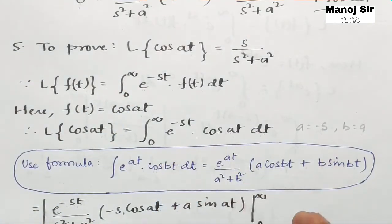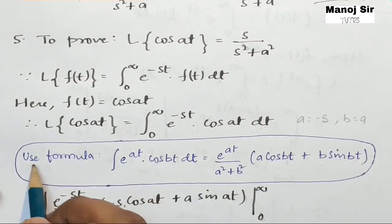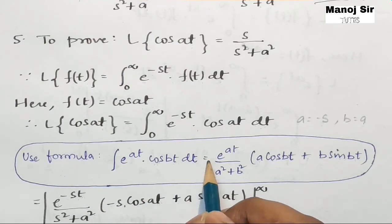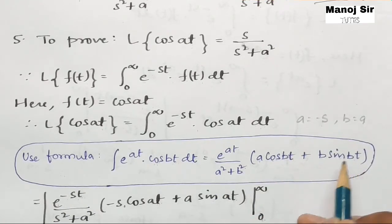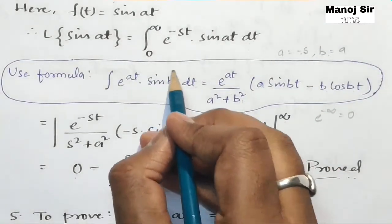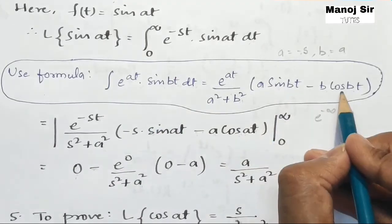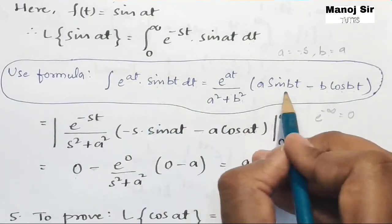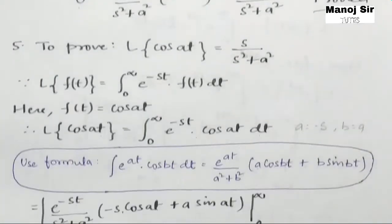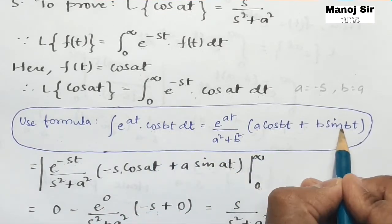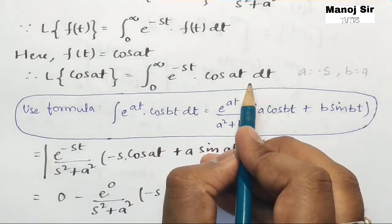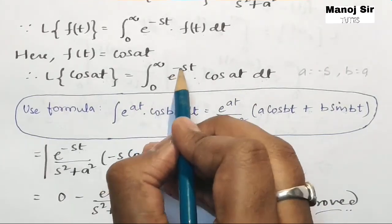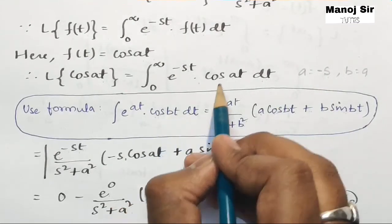Now we use a different formula to solve this integration: the integration of e^(at) into cos(bt) dt equals e^(at) upon a² plus b² into [a·cos(bt) plus b·sin(bt)]. Note that for the cosine formula it is cos plus sine, whereas for the sine formula it was sine minus cos. Comparing with our integral, a is minus s and b is a.